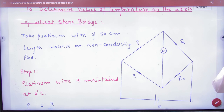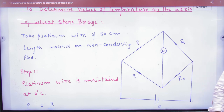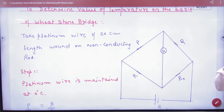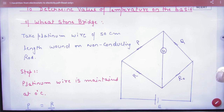Platinum wire is used because the relationship between temperature and resistance changes — it changes very quickly with temperature. So platinum is used for this. This is an experimental procedure done in three steps. First, you have to measure the temperature of a warm body. First of all, you have to keep this resistance on ice, at the ice point — 0 degrees Celsius. So this resistance will be R0.